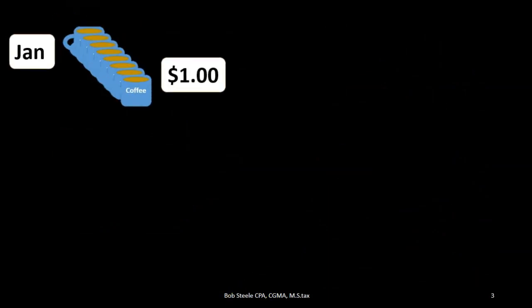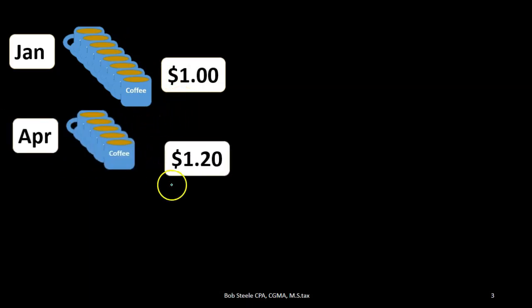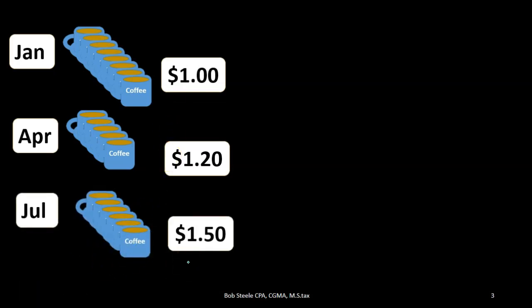Let's compare and contrast those methods briefly. We purchased coffee mugs in January — eight or so at $1.00. Then in April we bought five more at $1.20. The coffee mugs are going up in price even though they're exactly the same, because prices typically go up due to inflation. Then in July we purchased another batch at $1.50. We haven't sold any yet — we're stockpiling them. We now have $23.00 on our balance sheet as inventory.